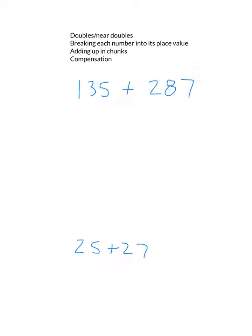But again, that's only going to happen in very few cases, where if you think about breaking each number into its place value, adding up in chunks, and compensation, those strategies can happen with all numbers.